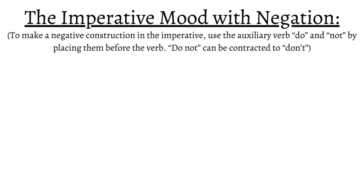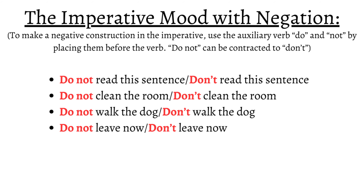To make a negative construction in the imperative, we use the auxiliary verb 'do' and the negative word 'not,' placing them before the verb that gives the command. 'Do not' can be contracted to 'don't,' which is also a perfect form. For example: 'Do not read the sentence' / 'Don't read the sentence.' 'Do not clean the room' / 'Don't clean the room.' 'Do not walk the dog' / 'Don't walk the dog.' 'Do not leave now' / 'Don't leave now.'